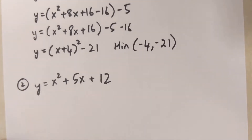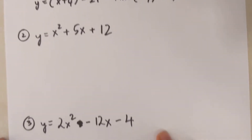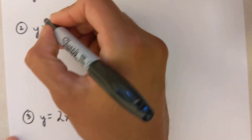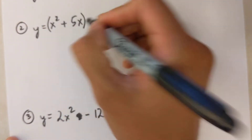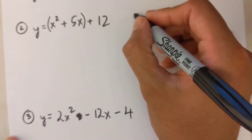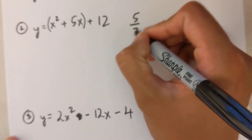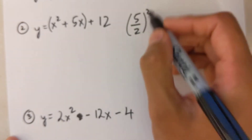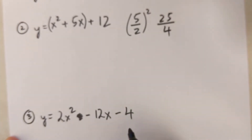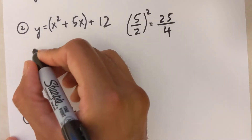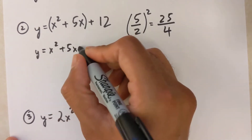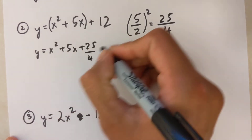I'm going to do a couple more examples that get progressively more difficult. Starting the second example: put my bracket, no term to factor out. I'll write the coefficient 5 on the side, divide by 2, then square it — 5 over 2 squared is 25 over 4, so now we have a fraction.